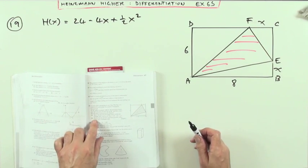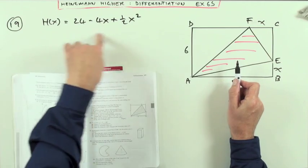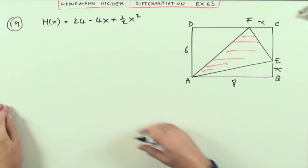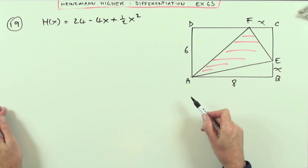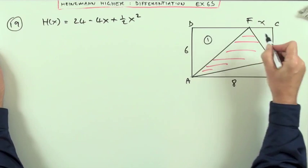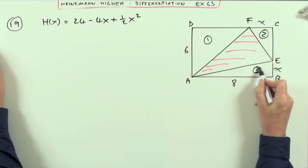Part A, show that the area of that red triangle is given by this. Now that's the first part of it, that's not really anything to do with the higher, that's just a little bit of algebra on areas of triangles and rectangles. So what I'll do is I'll call these triangles, I'll give them some names, call them 1, 2 and 3.